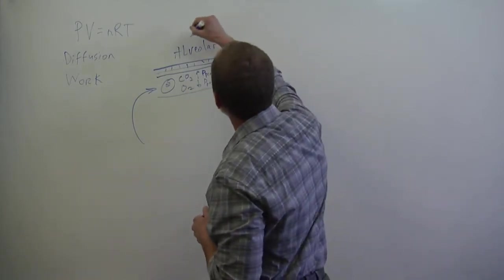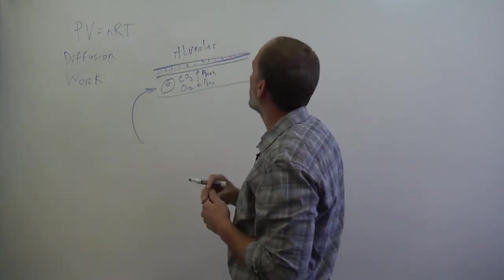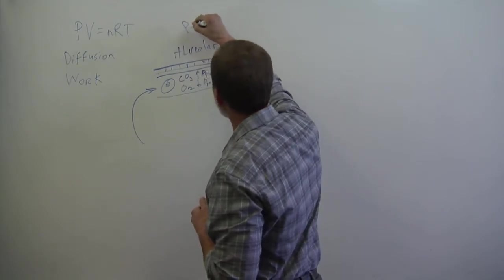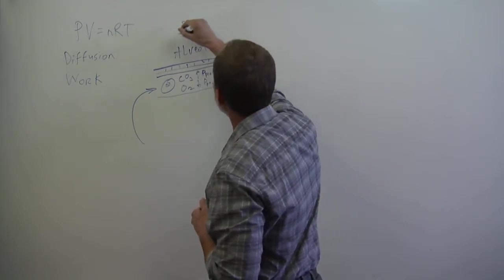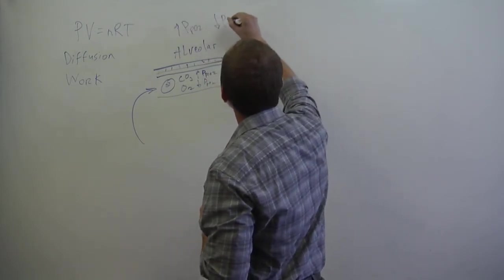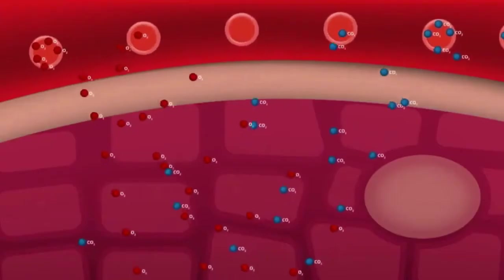So because of that, the alveolar pressure is atmospheric partial pressures of CO2 and oxygen. So the partial pressure of oxygen is very high. Partial pressure of CO2 is low. And just based on that, the gases exchange through diffusion across that membrane.